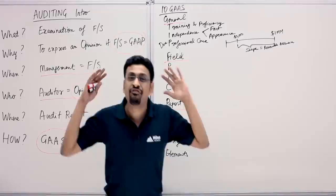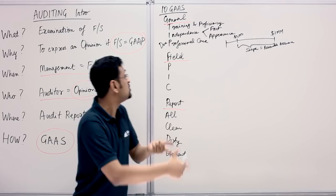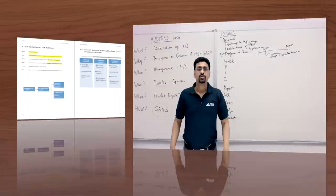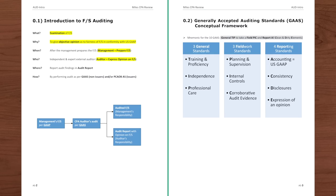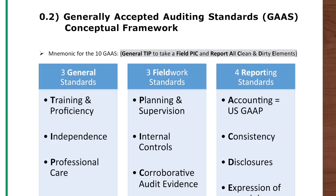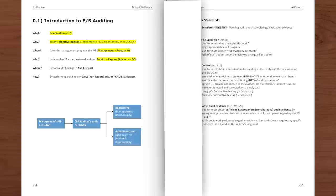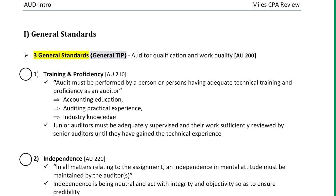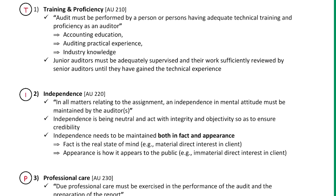So T is Training and Proficiency, I is Independence, P is Professional Care. Let's get to the book, highlight a bit, and come back to talk about the fieldwork standards. On page three, all 10 GAAS are listed — remember the mnemonic: the general tip, take a field pick, and report all clean and dirty elements. On page four, highlight the three General Standards and fill in the bubbles with T, I, and P.